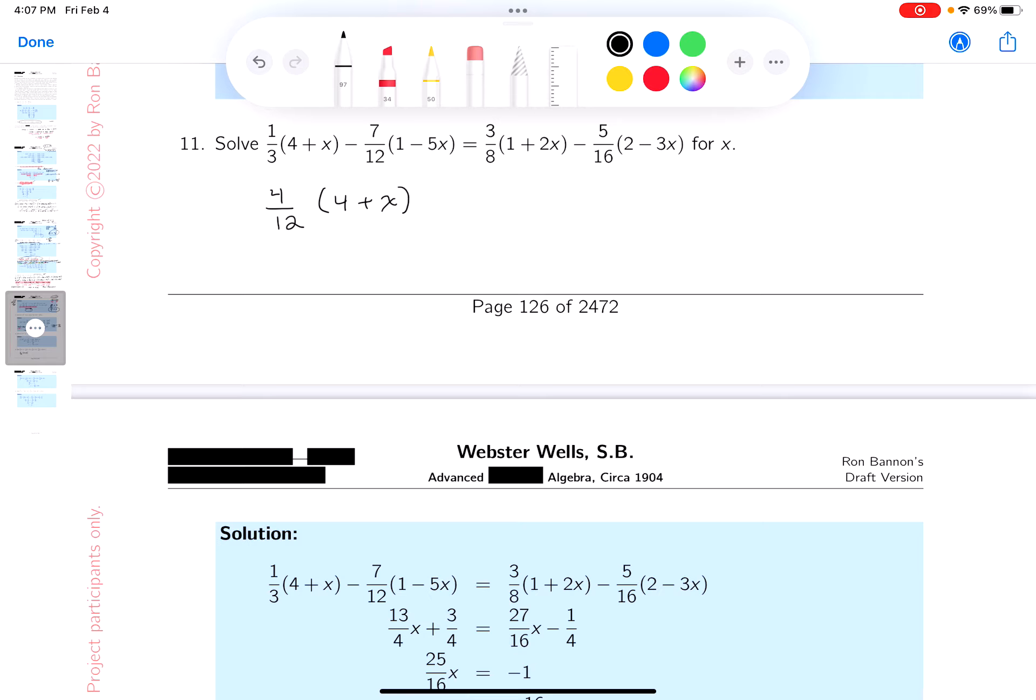And on the right side I'm going to get a common denominator of a sixteenth and that's going to be six sixteenths (1 plus 2x) minus five sixteenths (2 minus 3x). And now I'm going to use the distributive property to get rid of those grouping symbols.